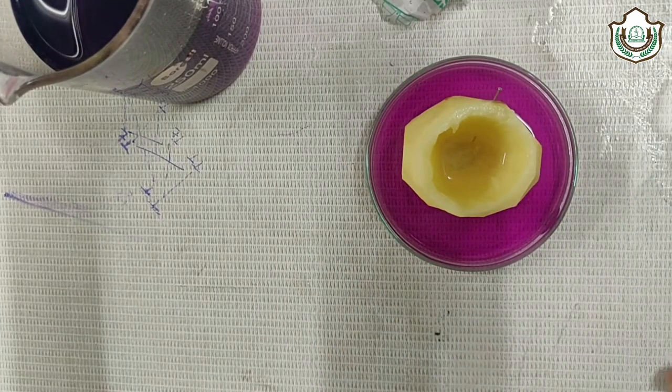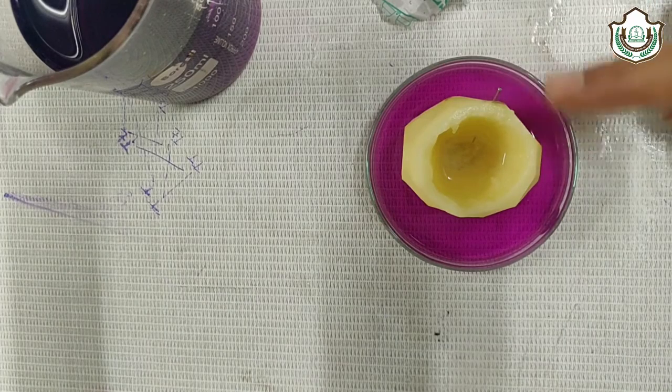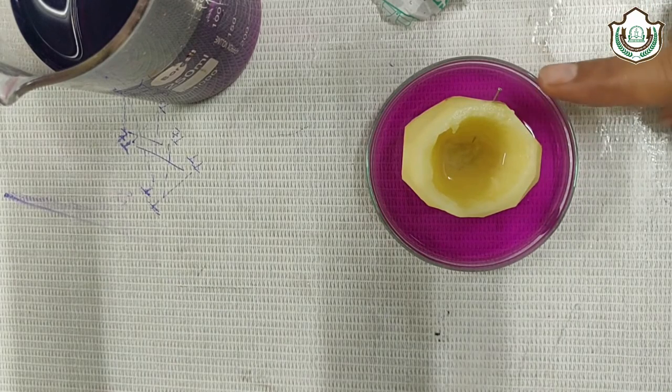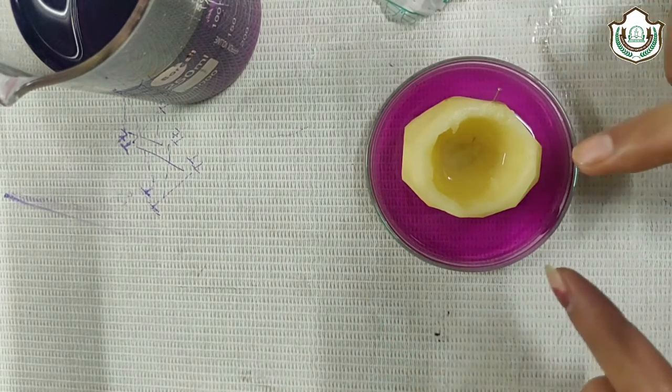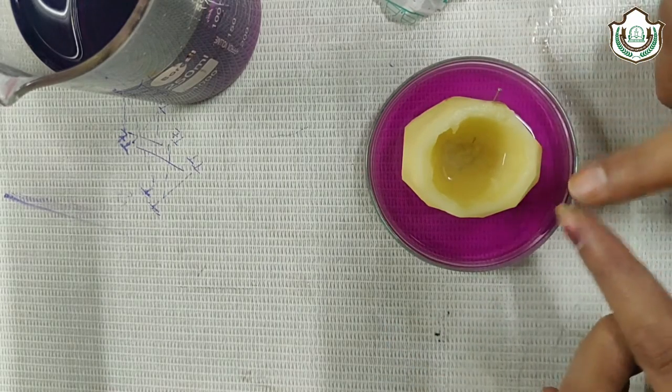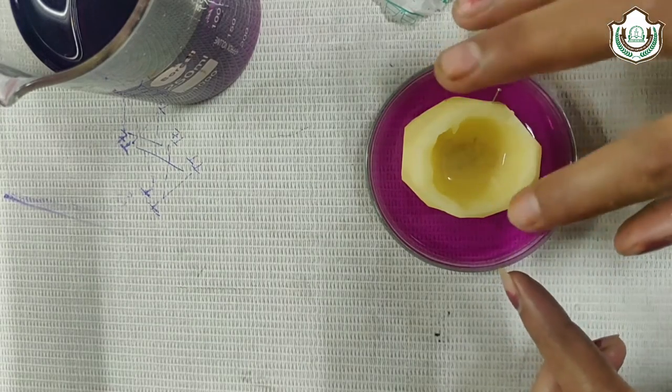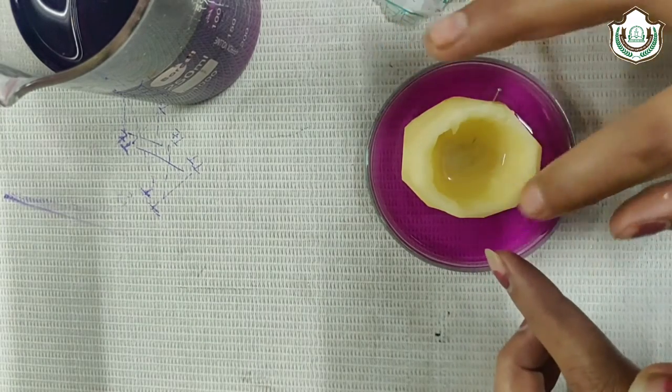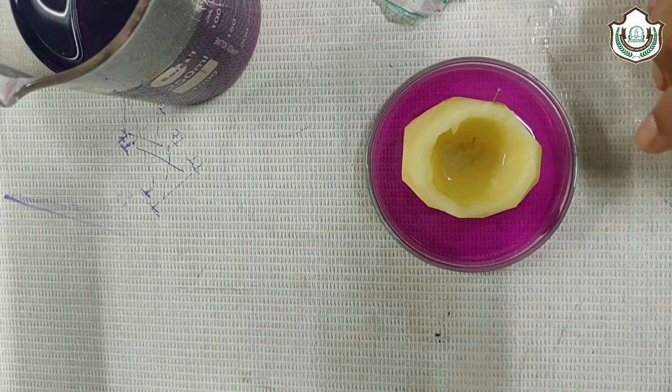After some time, you will see there is an increase in the level of sugar solution, that is sucrose solution, due to the endosmosis which takes place in potato cavity, in which the thin layer of potato acts as a semipermeable membrane. Thank you. Have a nice day.